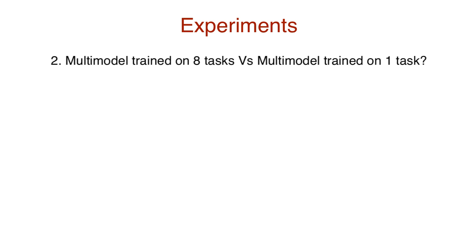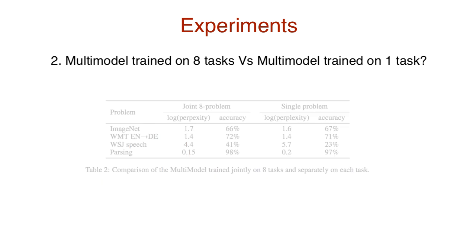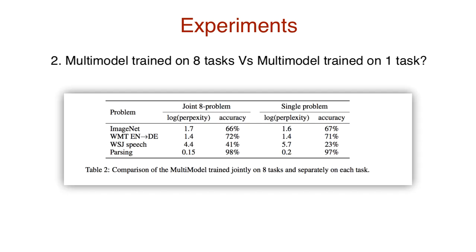Question 2: How does training on eight tasks simultaneously compare to training on each task separately? The multi-model performs on par for certain tasks, but performs even better on tasks where less data is available, as is in the case of parsing.